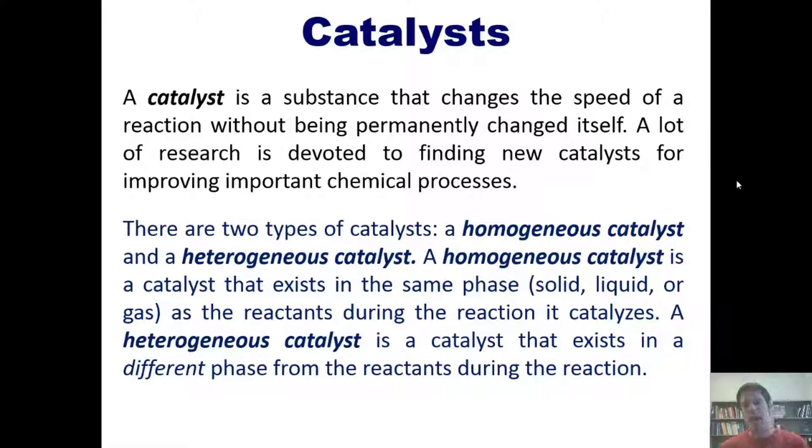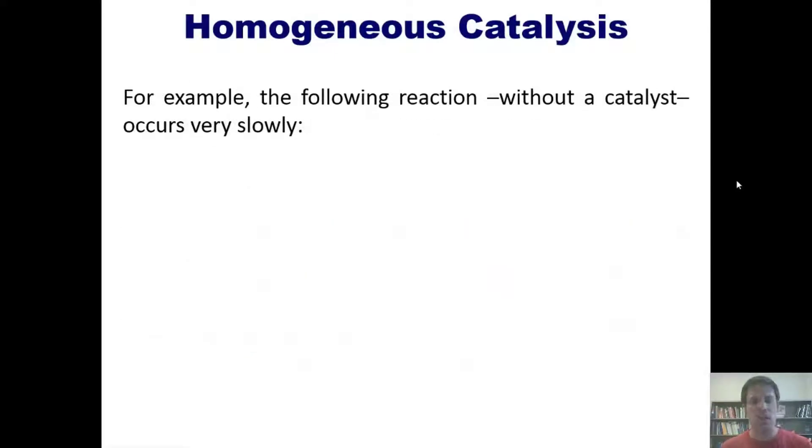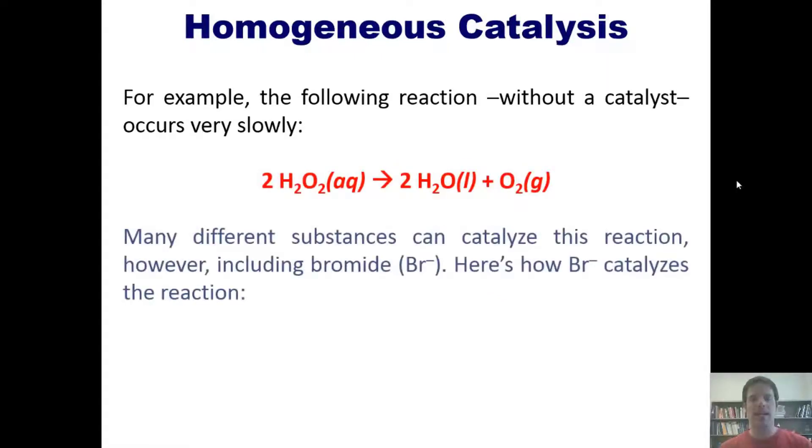For example, the following reaction without a catalyst occurs very slowly. Many different substances can catalyze this reaction, however, including bromide or Br⁻. Here's how bromide catalyzes the reaction: first, bromide combines with hydrogen peroxide and protons in solution to form dissolved bromine Br₂ and water. Then this bromine Br₂ combines with more hydrogen peroxide to reproduce bromide, proton, and O₂.